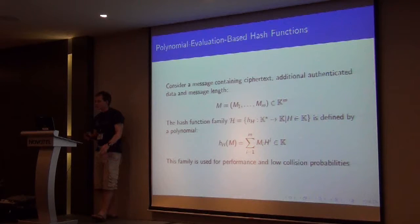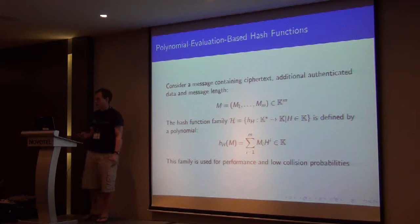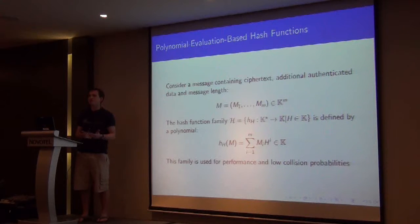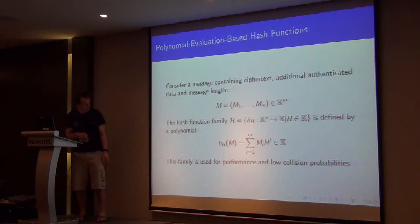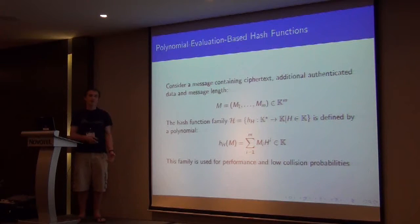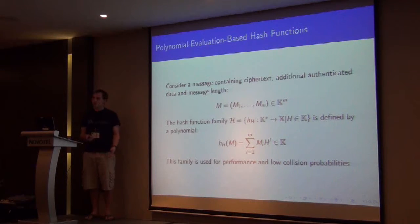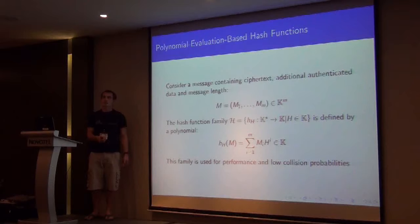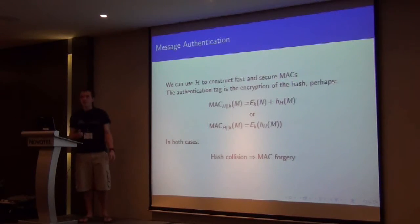And the common description for these hash functions is that we take our message and use that to define the polynomial. So each of the MIs are just the coefficients of the polynomial. And then we evaluate this polynomial at the hash key. And we use these to generally get good collision probabilities, so they're universal and XOR-universal hash functions.